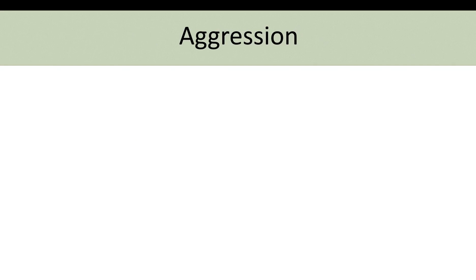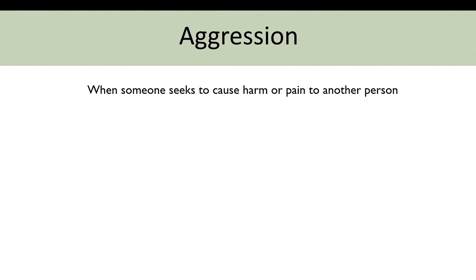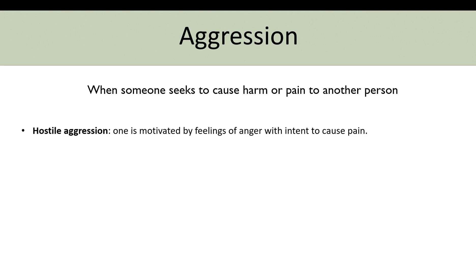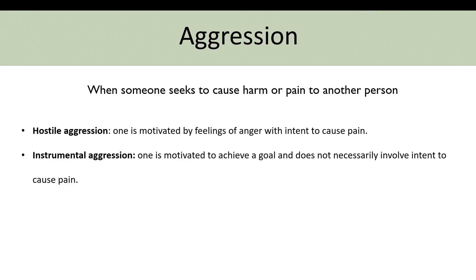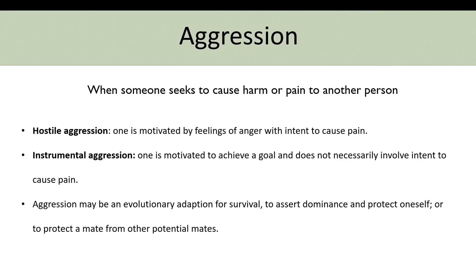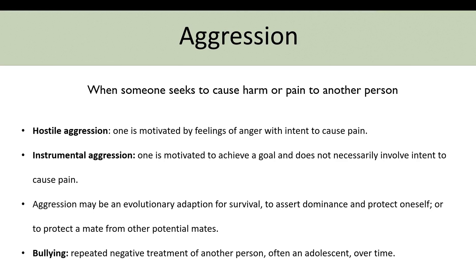Next, aggression is when someone seeks to cause harm or pain to another person. This includes hostile aggression, motivated by feelings of anger with intent to cause pain, and instrumental aggression, motivated to achieve a goal without necessarily intending to cause pain. Aggression may be an evolutionary adaptation for survival — to assert dominance, protect oneself, or protect a mate. Aggression also takes the form of bullying or cyberbullying, which is repeated negative treatment of another person, often a teen, occurring over time.